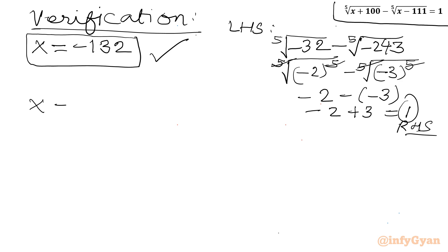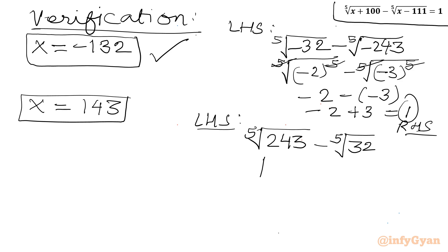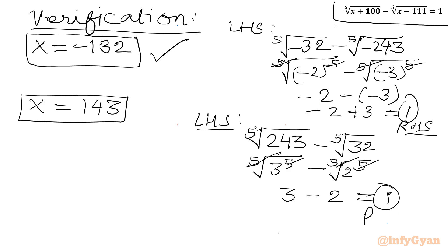For x equals 143: LHS = 5th root of (143 + 100) minus 5th root of (143 - 111) = 5th root of 243 minus 5th root of 32 = 5th root of 3⁵ minus 5th root of 2⁵ = 3 minus 2 = 1, which equals RHS. So x = 143 is also a verified solution. This brings the end of the video. Do not forget to like, share and subscribe. Bye-bye, good luck, take care.